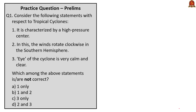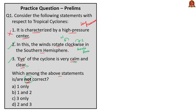First question: Consider the following statements with respect to tropical cyclones. Statement 1: it is characterized by a high-pressure center. Statement 2: winds rotate clockwise in the southern hemisphere. Statement 3: the eye of the cyclone is very calm and clear. Which statements are NOT correct? Statement 1 is wrong — tropical cyclones are characterized by a low-pressure center, not high-pressure. Statement 2 is correct — tropical cyclone winds rotate counterclockwise in the northern hemisphere and clockwise in the southern hemisphere due to the Coriolis force. Statement 3 is also correct — the eye is very calm and clear. Therefore, only Statement 1 is incorrect. The correct answer is option A, 1 only.